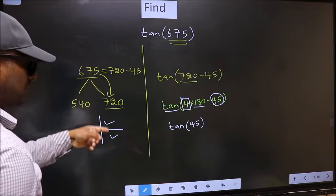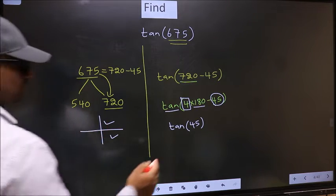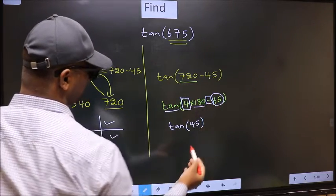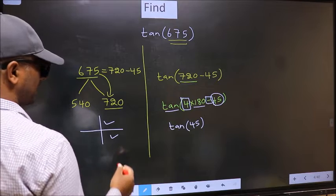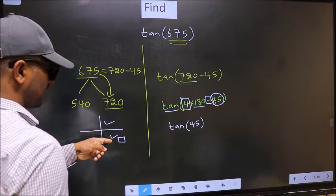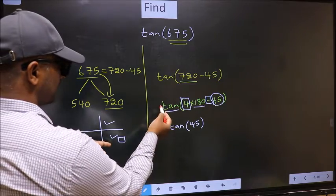So, now to select the quadrant, we should look at this symbol. Here we have negative. That means, angle lies in the fourth quadrant. And in the fourth quadrant, tan is negative.